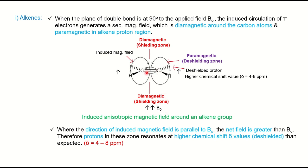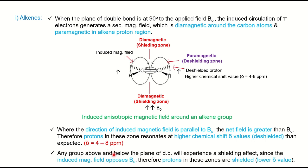When the magnetic field is parallel, the net field is greater, therefore showing higher chemical shift value. Above and below the double bond, the induced magnetic field opposes B0, so it shows shielding or lower delta value. Whenever a question comes on alkenes, you have to show the anisotropy of the alkene, describing all these points along with a fully labeled diagram.